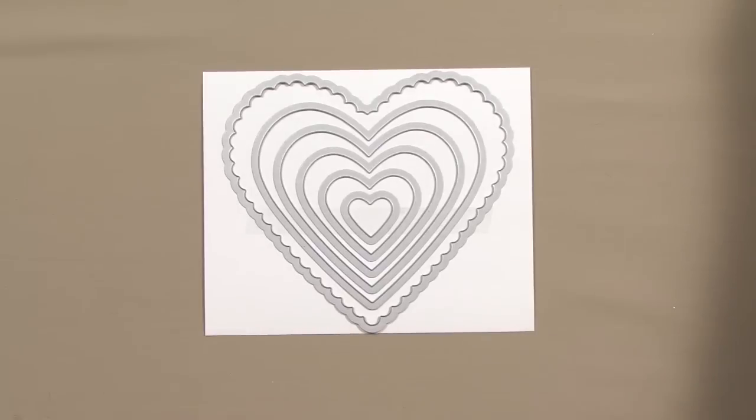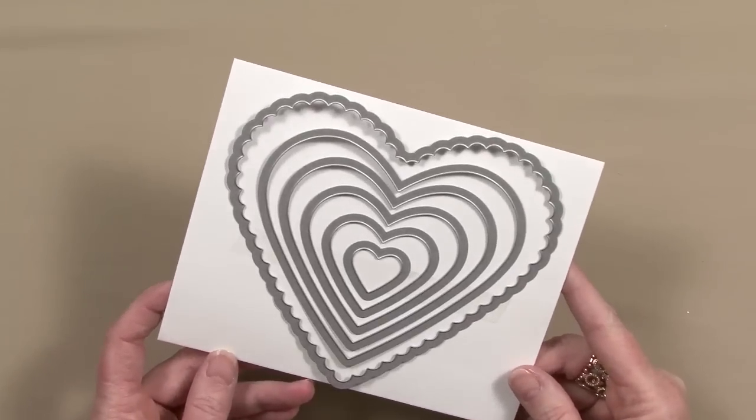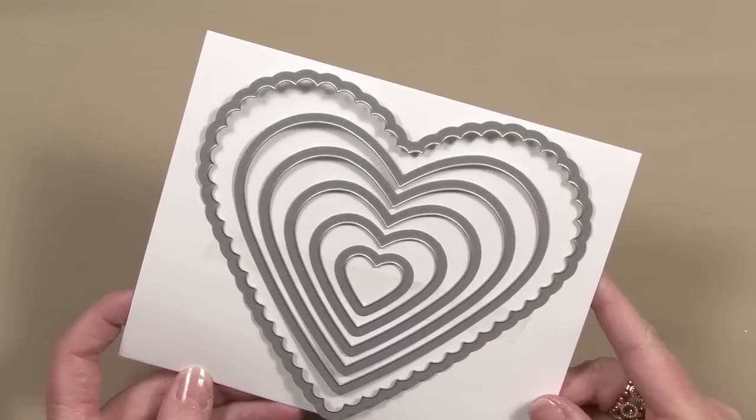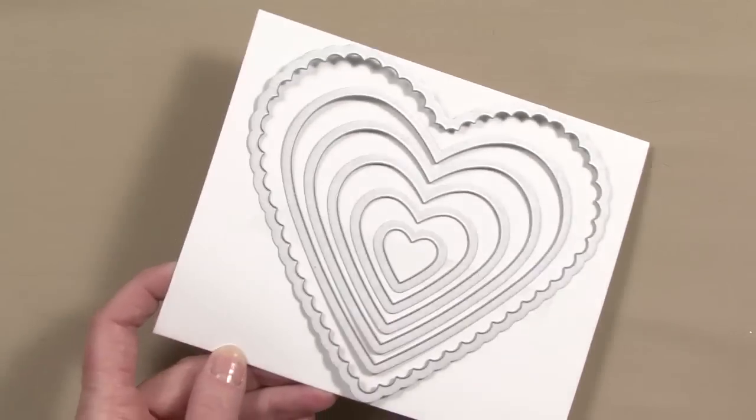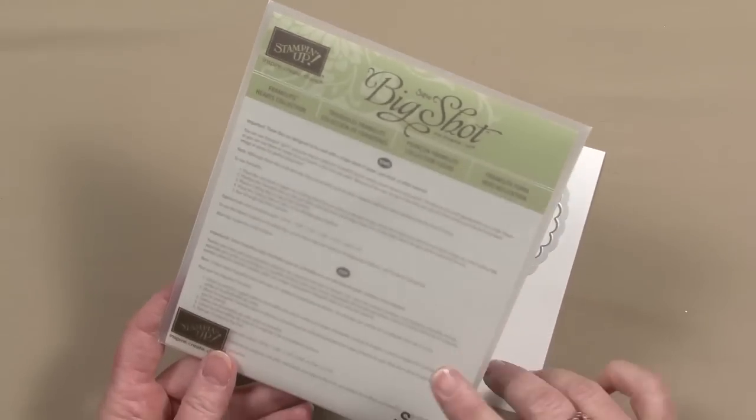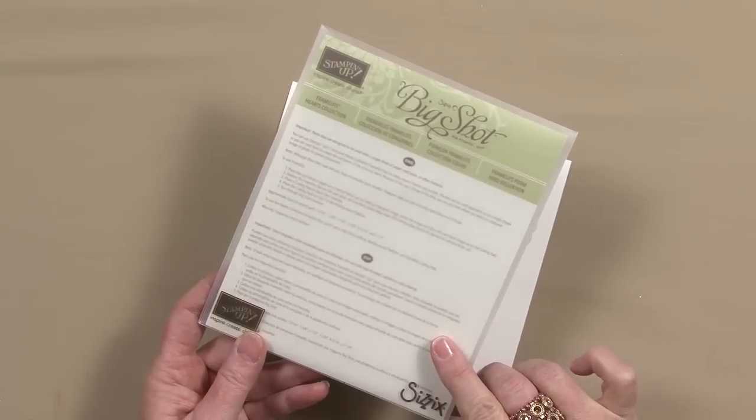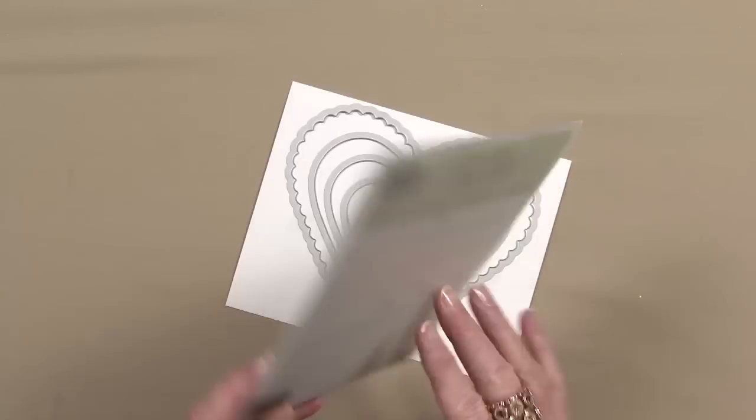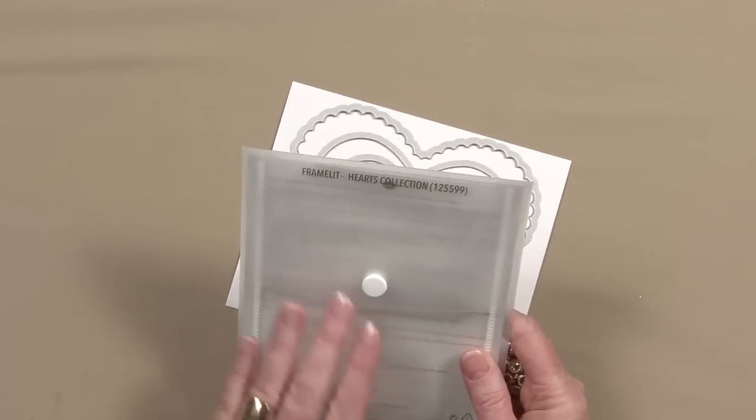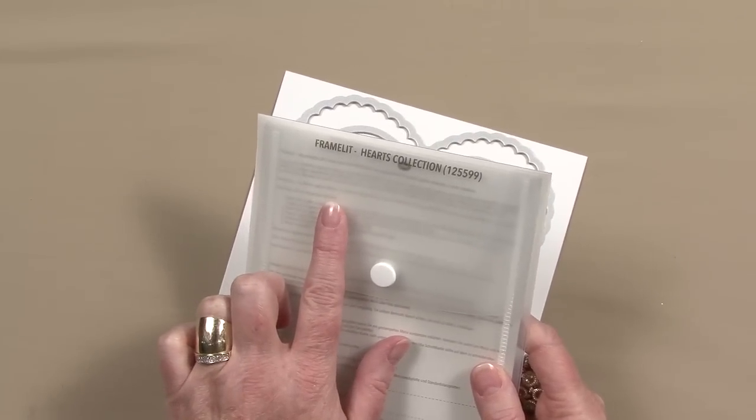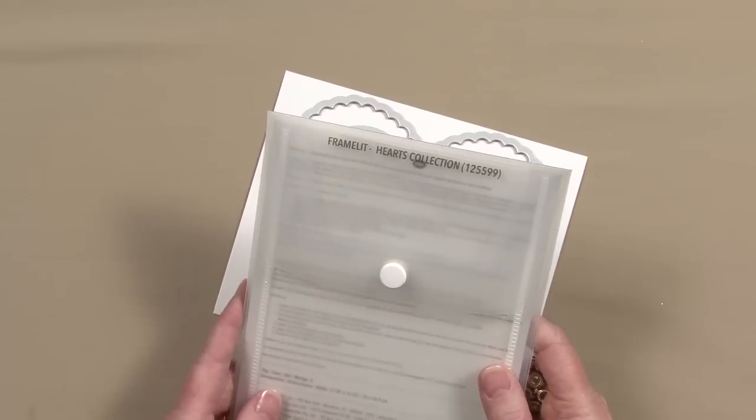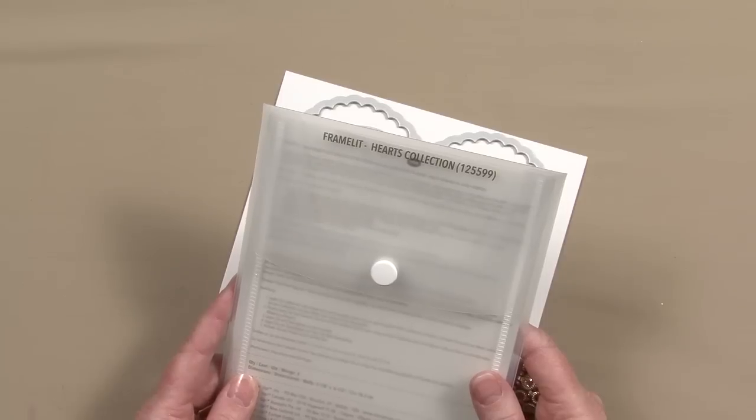These Framelits are from the Hearts Collection, and you get all six shapes when you order them. They come in a hard plastic envelope which includes an insert, so you'll have instructions on how to use them. And on the back, we've listed the name of the collection and also an item number. So with a quick glance, you'll know exactly what's inside.